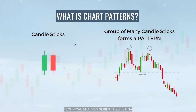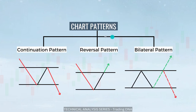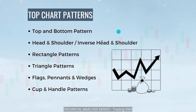So how are these chart patterns formed? A group of many candlesticks forms these patterns, which are very helpful for a trader to predict the direction of the stock. Basically, chart patterns are broadly classified into three types: continuation pattern, reversal pattern, and bilateral pattern. Continuation pattern tends to move in the same direction it had traveled; reversal pattern signals a reversal; and bilateral pattern is tricky — it works either way. It may continue the trend or it may reverse the trend.